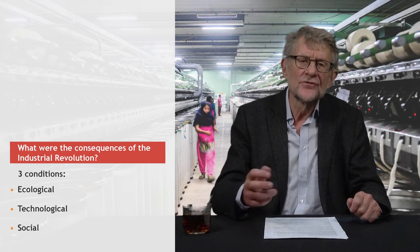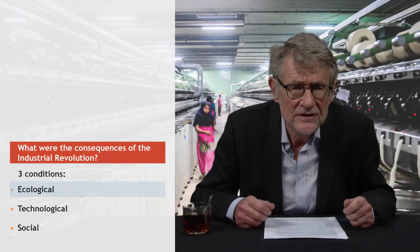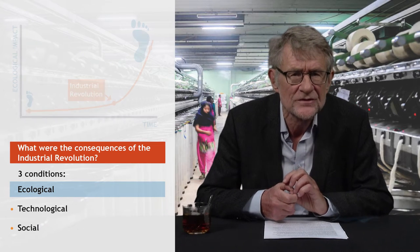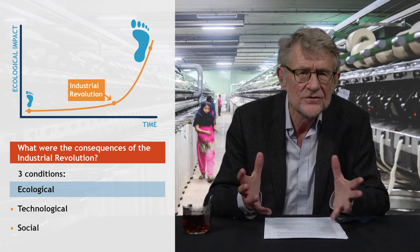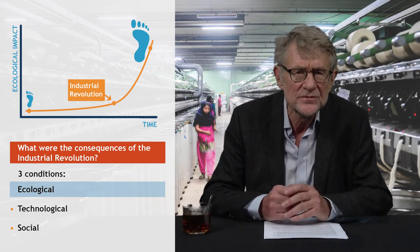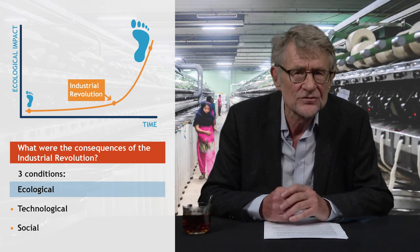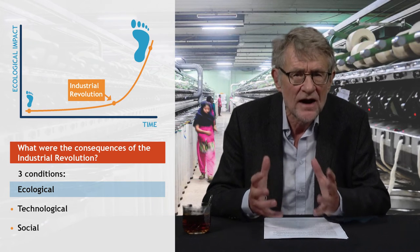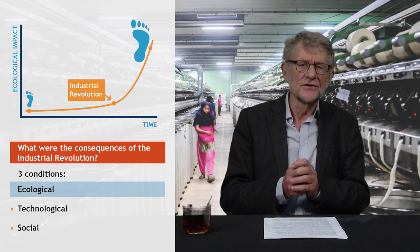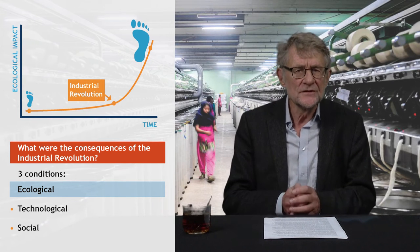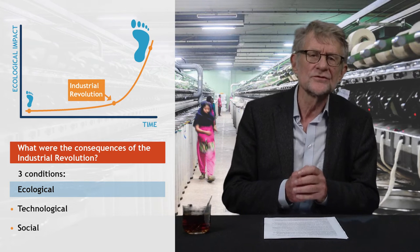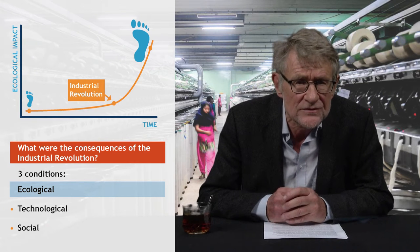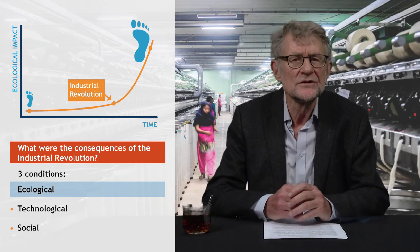The Industrial Revolution had far-reaching ecological consequences. It brought an enormous intensification of the human exploitation of non-human nature. In 1750, the Earth had to sustain less than 800 million people. Today, this number has increased to more than 7 billion, with a much higher consumption of goods and energy per head of population. One consequence is that total carbon emissions due to burning fuels increased more than 100-fold, with severe impacts on the global climate, as we have come to know only recently.